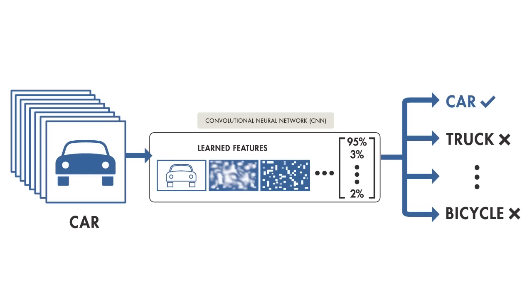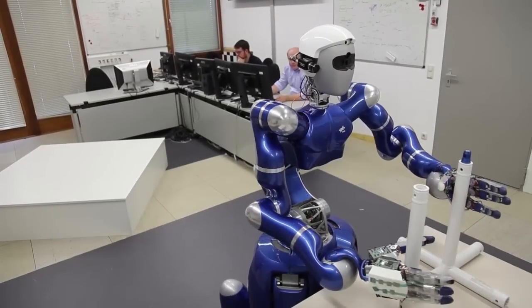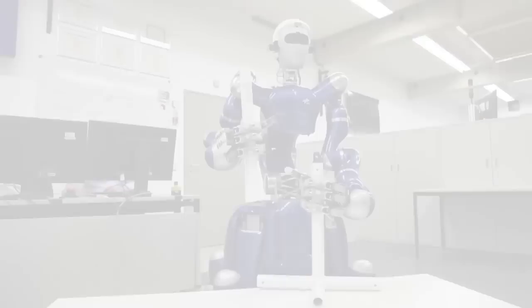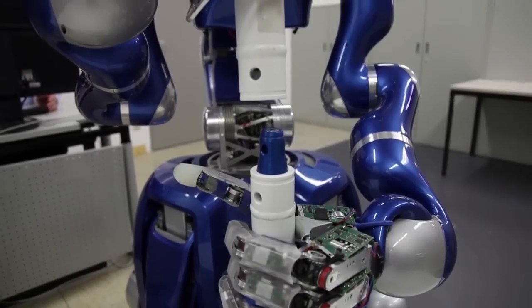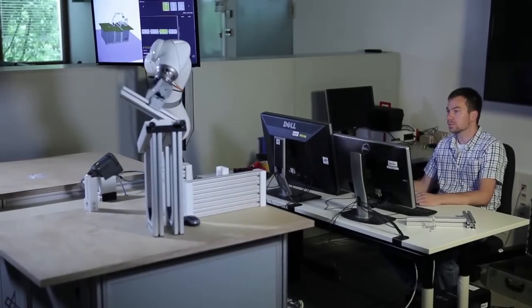We use the term end-to-end learning because the task is learned directly from data. Another example is a robot learning how to control the movement of its arm to pick up a specific object. In this case, the task being learned is how to pick up an object given an input image.